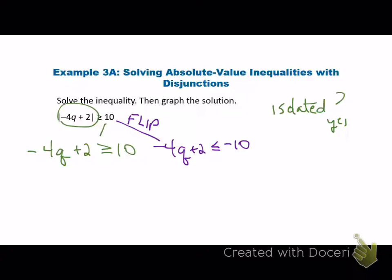Remember, negatives when we multiply or divide with inequalities causes that flip. Okay, just go back to your green one. We're going to solve it. What's your first step? How about subtract? So that would give us negative 4Q greater than or equal to 8. Now what?